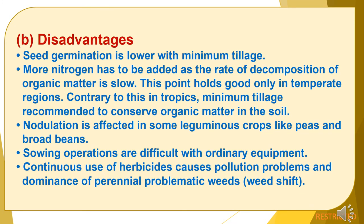Disadvantages of minimum tillage. First, seed germination is lower with minimum tillage. Second, more nitrogen has to be added as the rate of decomposition of organic matter is low — this point holds good only in temperate regions. Contrary to this, in the tropics, minimum tillage is recommended to conserve organic matter in the soil. Third, nodulation is affected in some leguminous crops like peas and broad beans. Fourth, sowing operations are difficult with ordinary equipment. Fifth, continuous use of herbicide causes pollution problems and dominance of perennial problematic weeds.